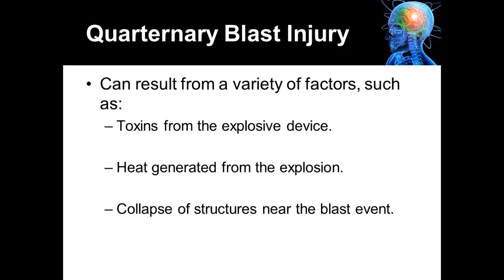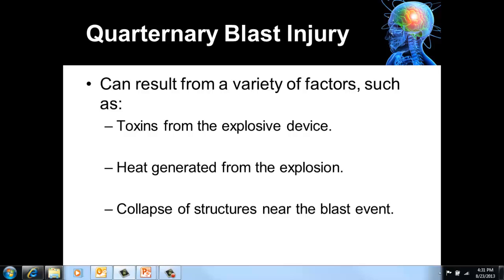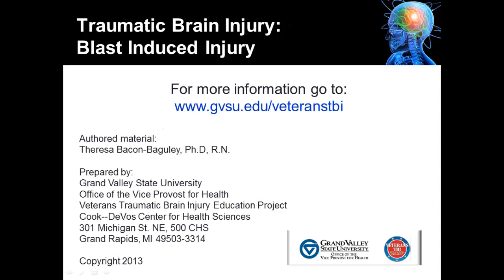Quaternary blast injury can result from a variety of factors such as toxins from the explosive device — gases liberated from the explosive — heat generated from the explosion, as well as collapse of structures near the blast event. Burns are very typical after an explosive device goes off. This is the end of the module on blast induced injury. Thank you.